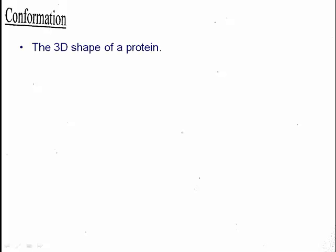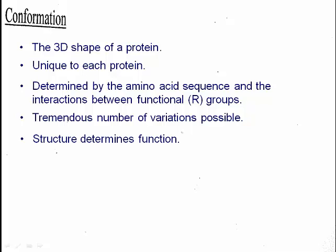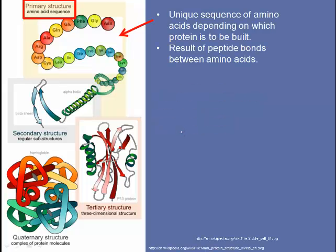Conformation is the three-dimensional shape of a protein. It's unique to each protein and is determined by the amino acid sequence and the interaction between functional R groups. There is a tremendous number of variations possible, and the structure that's produced determines the function of the protein. There are four levels of protein organization. The first is called the primary structure, and it's simply the unique sequence of amino acids depending upon which protein is to be built.